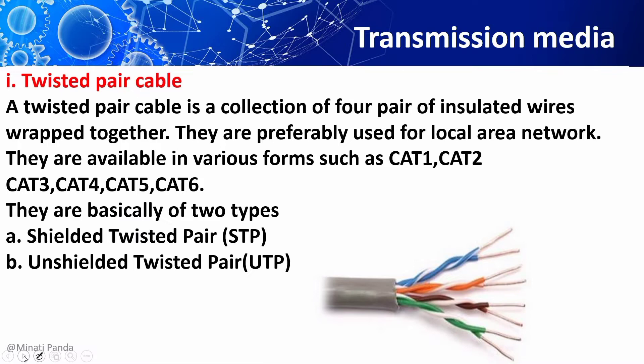Twisted pair cables are a type of guided media. It was invented by Alexander Graham Bell. The most common form of wiring in data communication applications is the twisted pair cable. It consists of two identical wires wrapped together in a double helix structure. These cables have two conductors that are generally made up of copper, and each conductor has insulation. One of the conductors is used to carry signal and the other is used as a ground reference only.